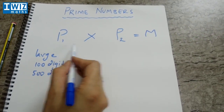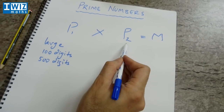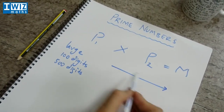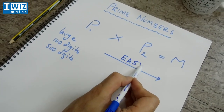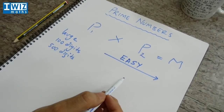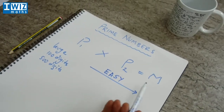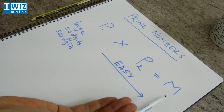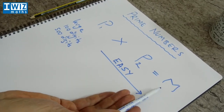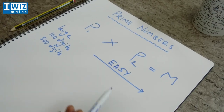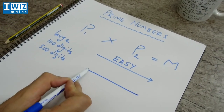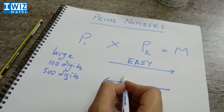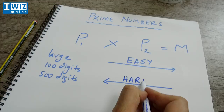When we go in this direction — if we multiply P1 and P2 together to get M — that computation is actually easy. It's not very easy by hand, but it's easy for a computer to do. Now, if you want to go in the other direction — if I gave you M but did not give you P1 and P2, and I said can you work out P1 and P2 — going from M to find P1 and P2 actually turns out to be very hard.